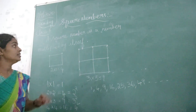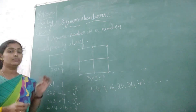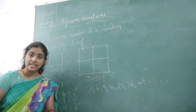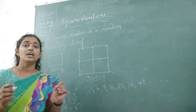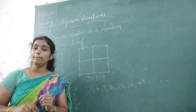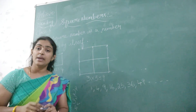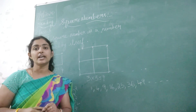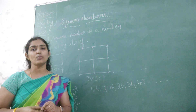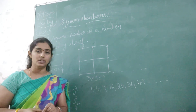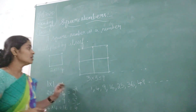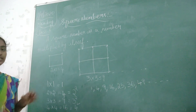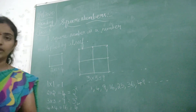So a square number is a number where if you take any number and multiply it by the same number, then you will get a square number. So this is about square numbers. Thank you.